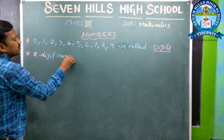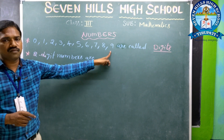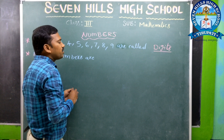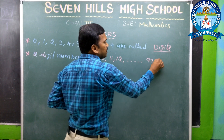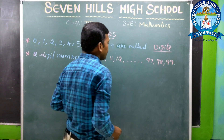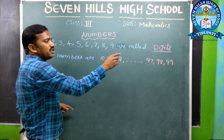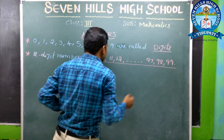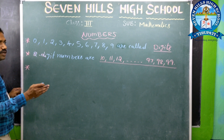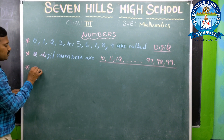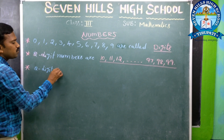2-digit numbers start from 10 — 11, 12, and so on up to 97, 98, 99. 2-digit numbers start from 10, 11, 12, up to 97, 98, 99. Here, 10 is a 2-digit number and it is the smallest 2-digit number.